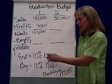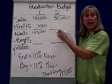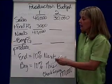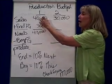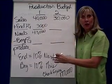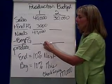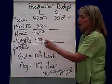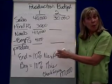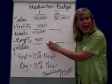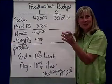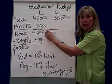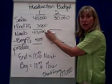Does it make sense that if ending is equal to 10% of the next quarter, that the beginning finished goods inventory is equal to 10% of the current quarter? Because that was the assumption. So beginning finished goods would be 4,000 bottles of water. We subtract that, because these 4,000 go to meeting our desired needs.